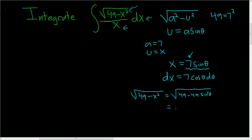Now we factor out a 49. So this is the square root of 49 times the square root of 1 minus sine squared. The square root of 49 is 7 and then 1 minus sine squared is cosine squared. And so we end up with 7 cosine theta.